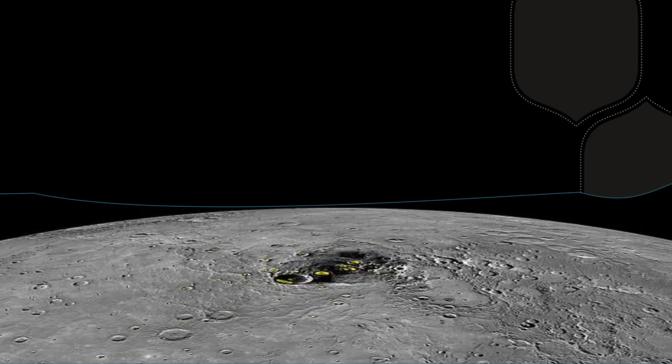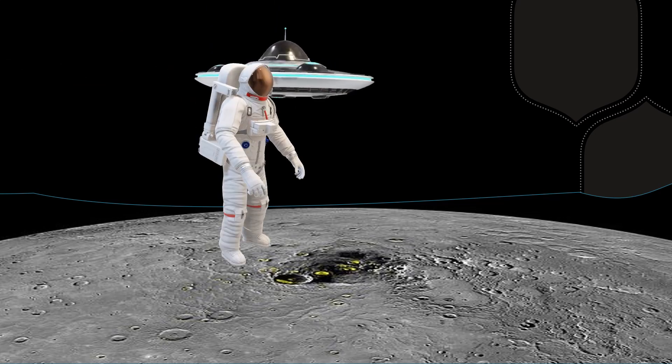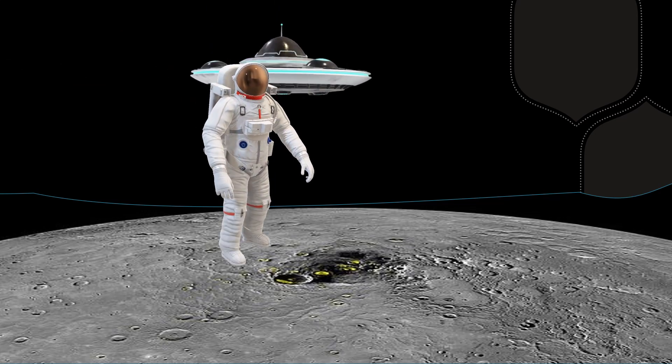Now, we land on the surface of Mercury. It looks like the surface of the Moon.